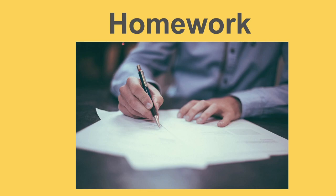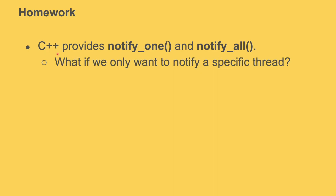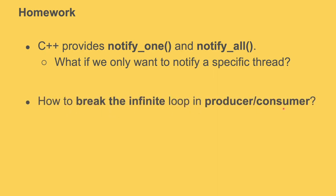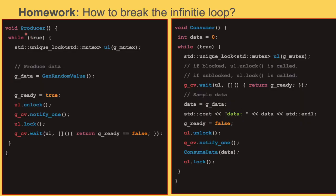This wouldn't be complete without homework. Question one: C++ provides notify_one and notify_all. Check the documentation and figure out how you can notify a specific thread — since only notify_one and notify_all are provided, how would you send a notification to just one particular thread? Question two: how do you break the infinite loop in producer and consumer? If at some point the producer wants to tell the consumer 'I have no more data, stop waiting and move on,' how can this be done?